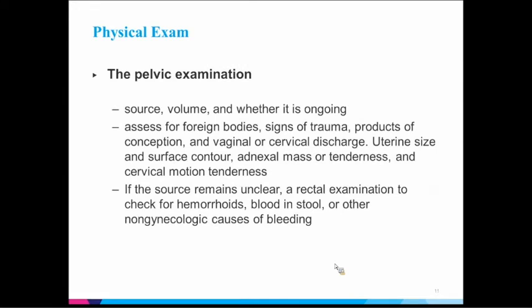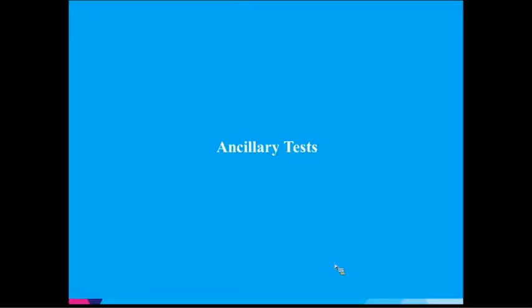On pelvic exam, you're looking for the source and volume of bleeding. A lot of times when people have vaginal bleeding we assume it's coming from the uterus — that she's miscarrying — but it could be coming from the cervix or the vagina. She could have foreign body, signs of trauma, or products of conception at the cervix. If it's unclear and there's no bleeding visible inside, it could be rectal bleeding or coming from the bladder.